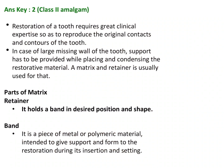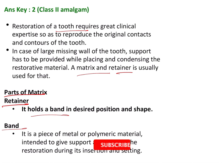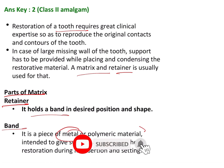Restoration of a tooth requires great clinical expertise to reproduce the original contact and contour of the tooth. The matrix and retainer are used for giving the missing wall in case of Class 2 cavities. Parts of the matrix include the retainer — a rod-like instrument that holds the band in the desired position and shape — and the band, which can be a piece of metal or polymeric material.